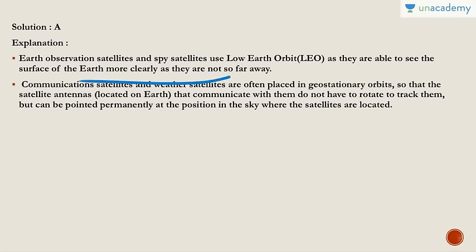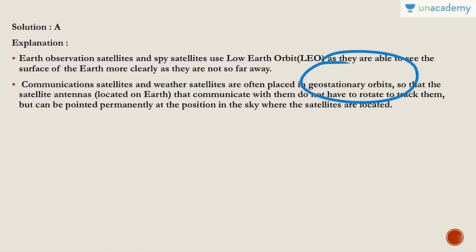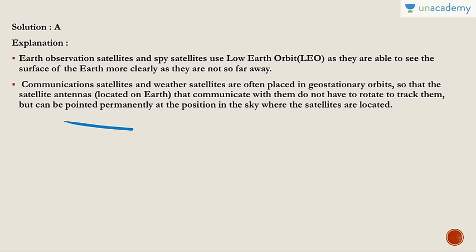Communication satellites and weather satellites are often placed in geostationary orbits so that satellite antennas located on Earth do not have to rotate to track them. They can be pointed permanently at the fixed position in the sky where the satellites are located.